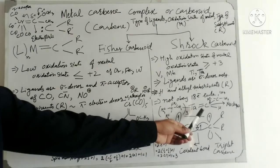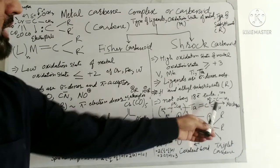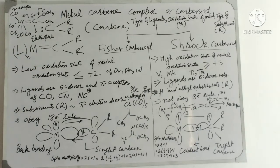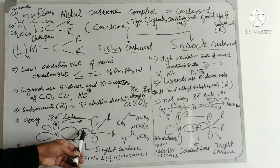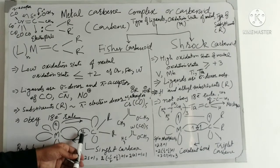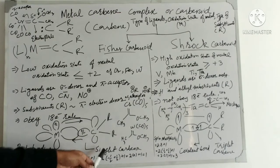So, to summarize the nature of the carbene: in Schrock Carbenoid, the carbene carbon is nucleophilic, whereas in Fischer Carbenoid, the carbene carbon is electrophilic. Another point: in Fischer Carbenoid, the carbene has two valence electrons with opposite spin — they are paired — and this is called singlet carbene. So, in Fischer Carbenoid, singlet carbene is present.